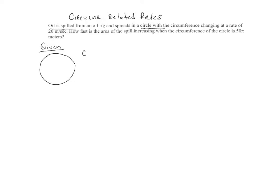It's changing at a rate of 20. So this is dc dt. This says that it's a rate. 20 meters per second, it even gives us the units of meters per second. So since this is a rate, I will express this as dc dt. And then it says, how fast is the area changing?